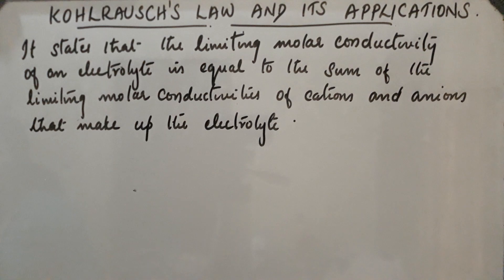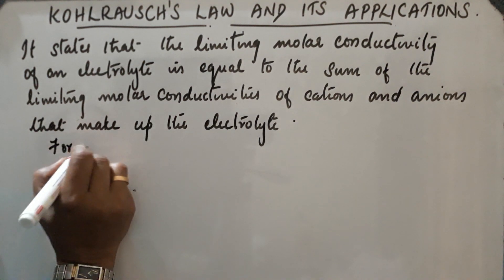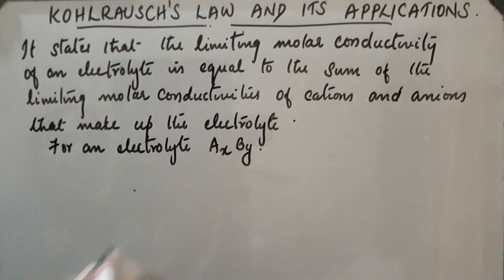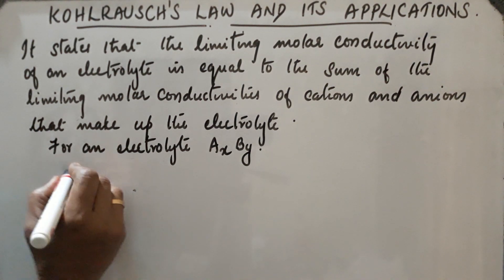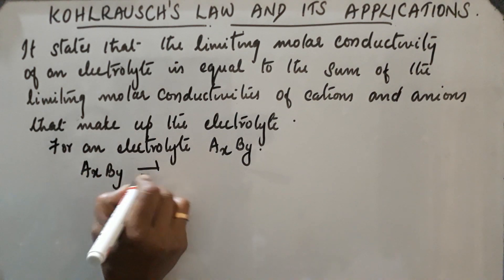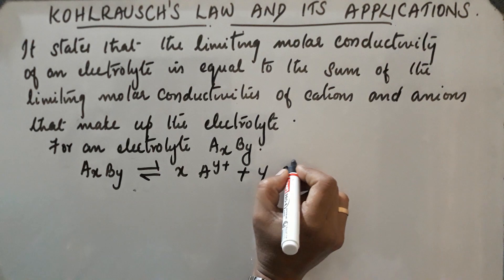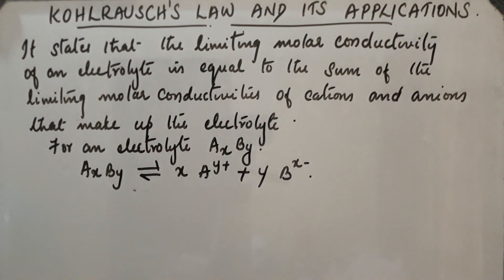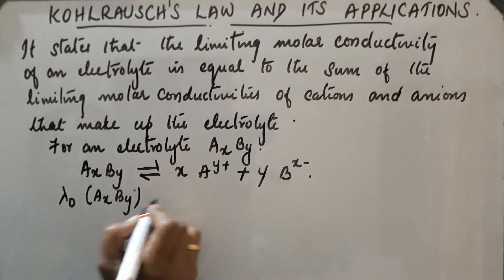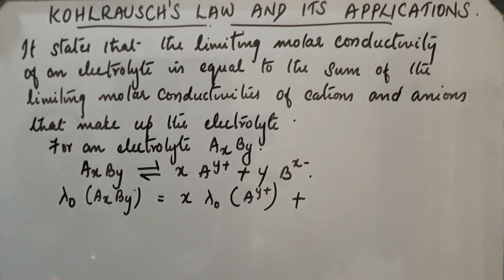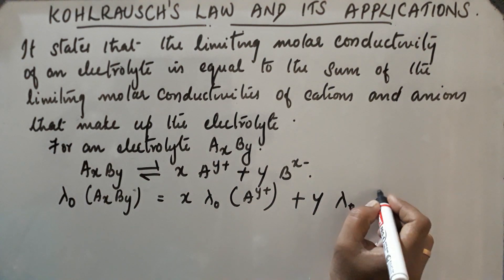For an electrolyte, let the electrolyte be A_x B_y. Here A_x represents the positive ions and B_y the negative ions. A_x B_y dissociates as x(A^y+) plus y(B^x−). The limiting molar conductivity of A_x B_y will be equal to x times the molar conductivity of A^y+ plus y times the limiting molar conductivity of B^x−.